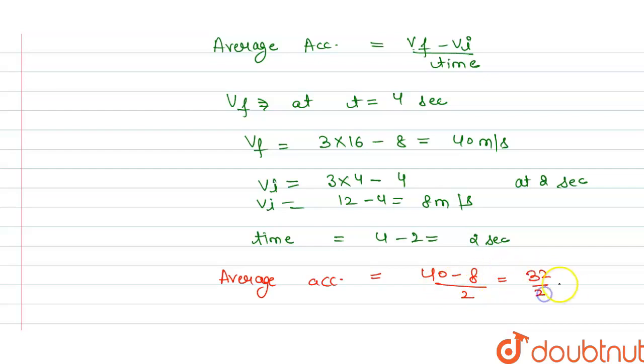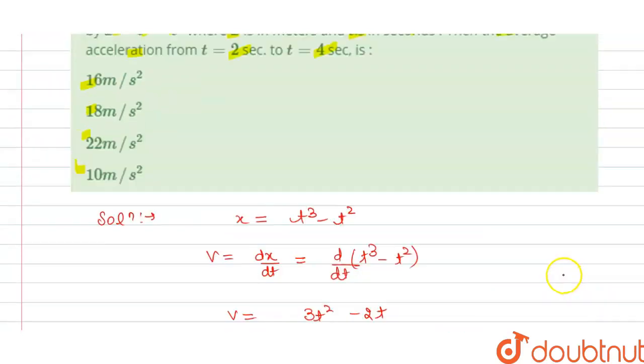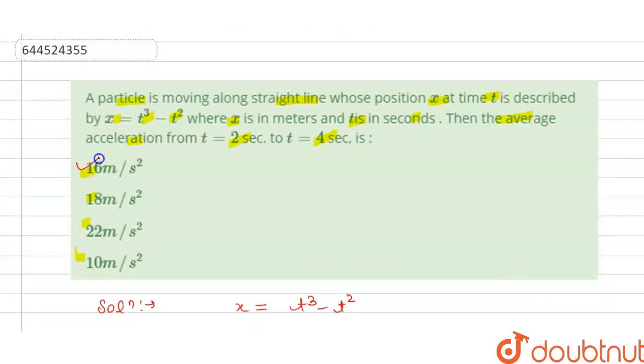32 divided by 2, and this equals 16 meters per second square. So our option A is correct here, and this is the answer for this question. Thank you.